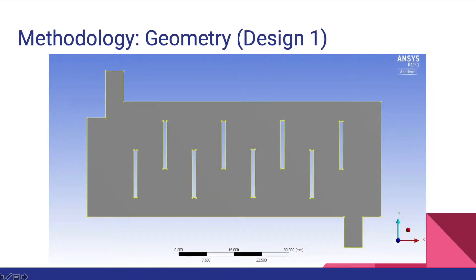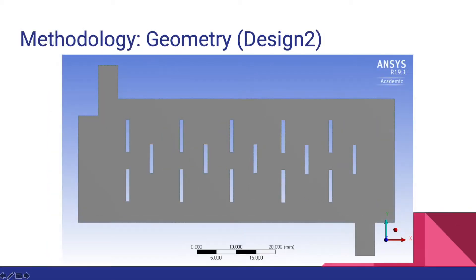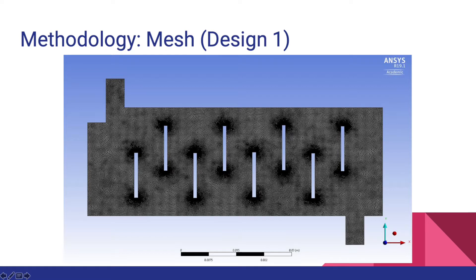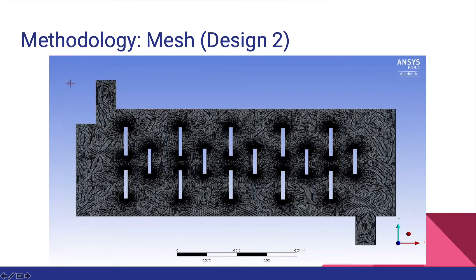This is the Design 1 geometry that we made in ANSYS Fluent, and this is the Design 2 geometry. Here is the mesh for Design 1. The total number of elements in both meshes is 148,000 and the nodes are 75,697. Here is the mesh for Design 2. An all-triangular meshing method was used on the whole body with a refinement of three, and edge sizing was done on the tubes and baffles.